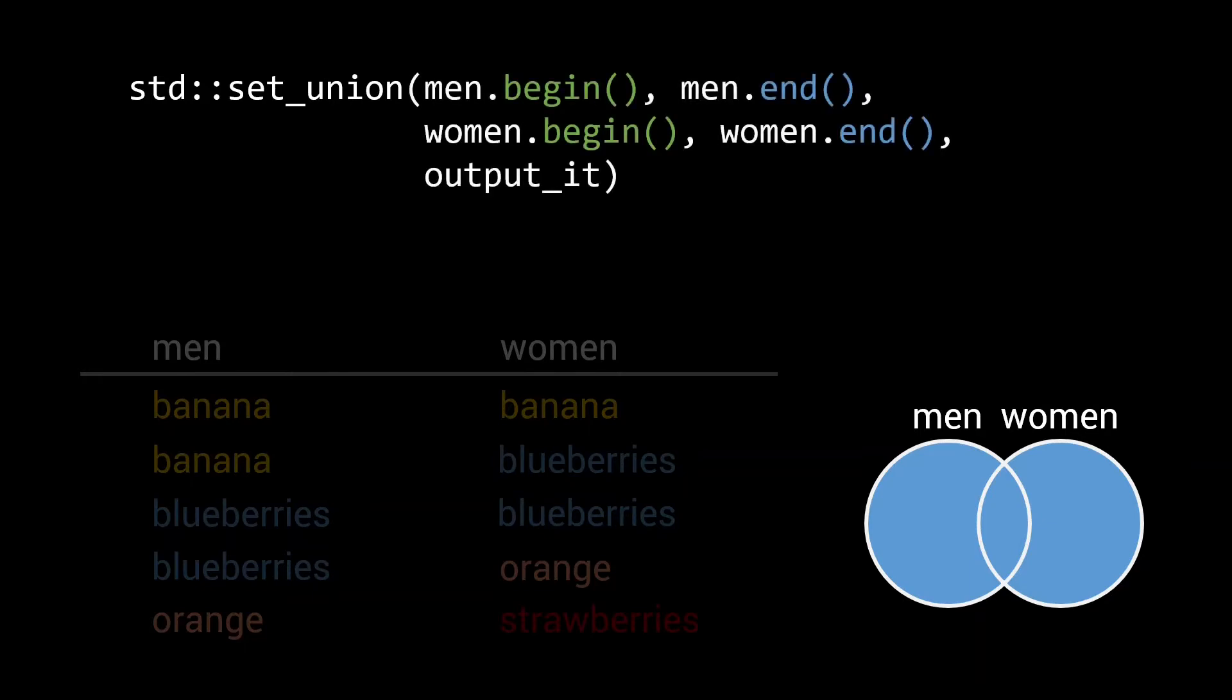Just like the set-intersection algorithm, both inputs as well as the output are specified using iterators. Looking at our inputs,